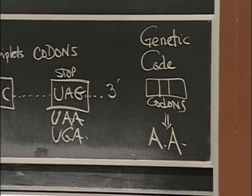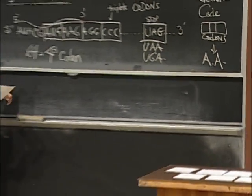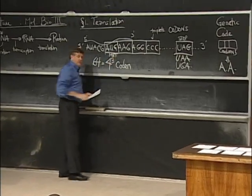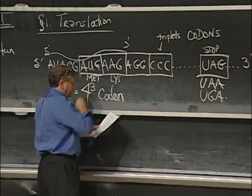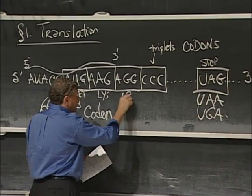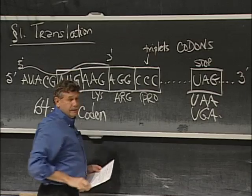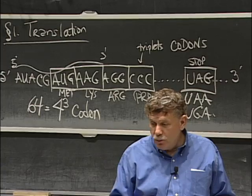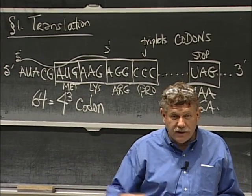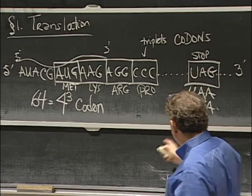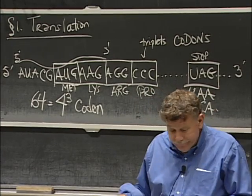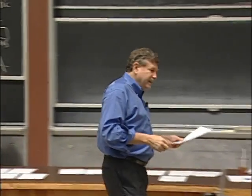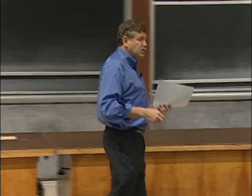The genetic code translates these codons into amino acids, or to stop in the case of the three stop signals. So for example, this AUG at the front is always translated into methionine. And if I've got it right, this should be a lysine, arginine, proline, et cetera. You just look it up. That's the order in which you make the protein — you send off an order written in RNA, and the factory sends you back a protein that is methionine, lysine, arginine, proline, and so on.